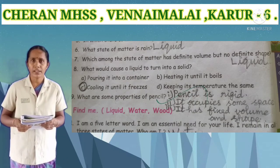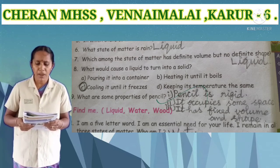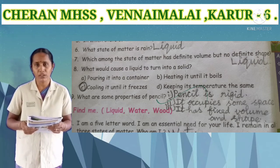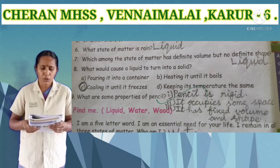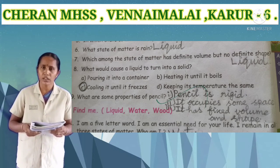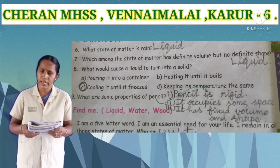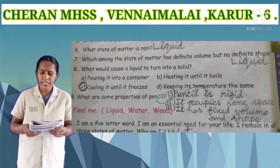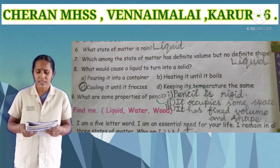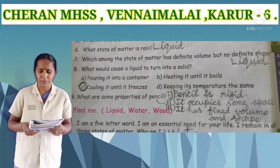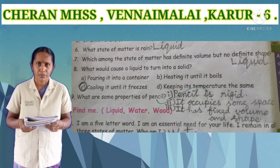Sixth one: what state of matter is rain? Answer: liquid. Seventh one: which state of matter has definite volume but no definite shape? Answer: liquid. Eighth one: what would cause a liquid to turn into a solid? Options: A) pouring it into a container, B) heating it until it boils, C) cooling it until it freezes, D) keeping its temperature the same. Answer: C — cooling it until it freezes.